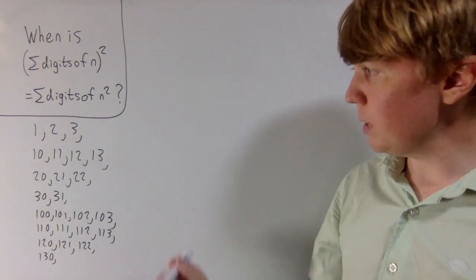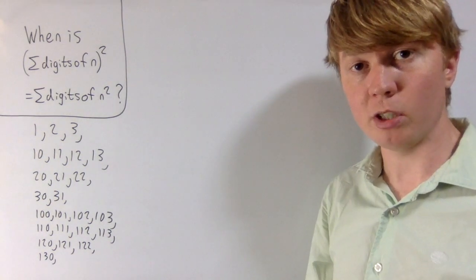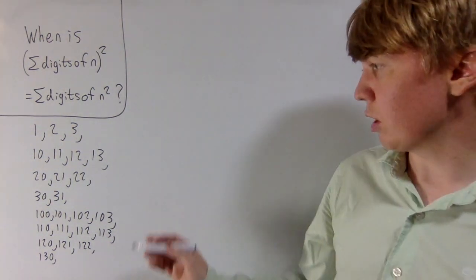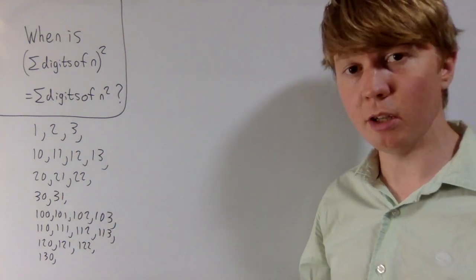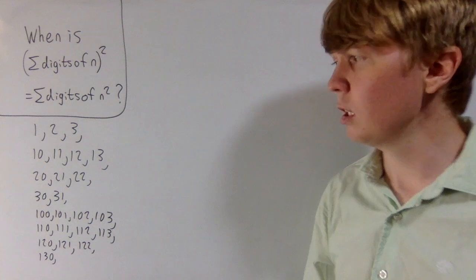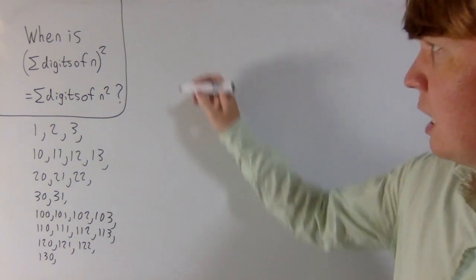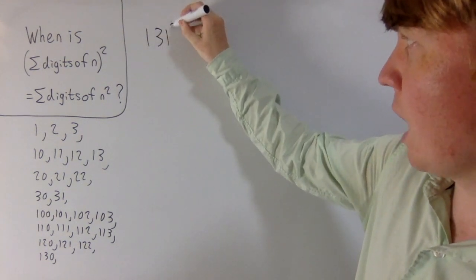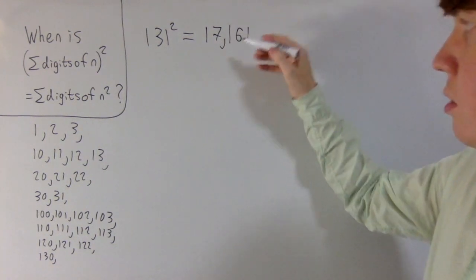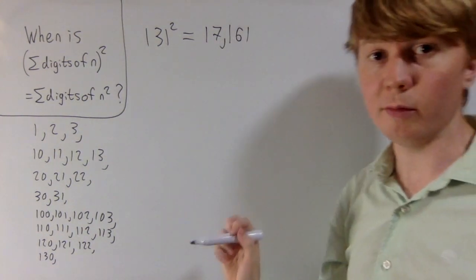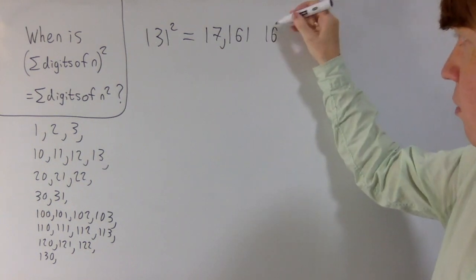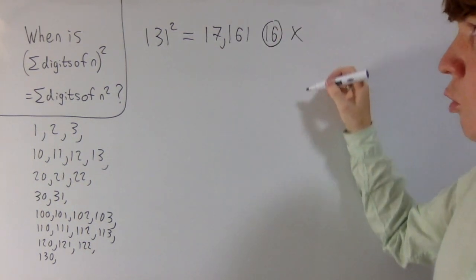Looking at this list, you'll immediately see there don't seem to be any numbers which have a digit 4 or greater. There's also maybe some restriction — you can't have a 2 and a 3 together in the number, and perhaps we also can't have more than one 3 appear in our digits. But then if we look at 131 squared, this is 17,161. We want the sum of digits here to be 25, but unfortunately the sum of digits is only 16, so this doesn't fit our rule either.